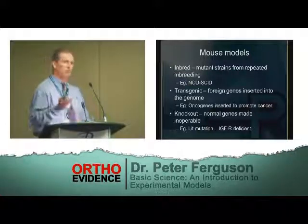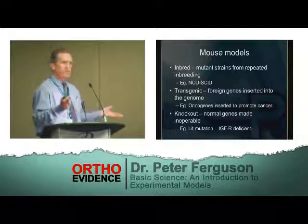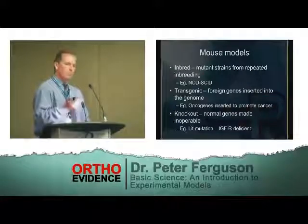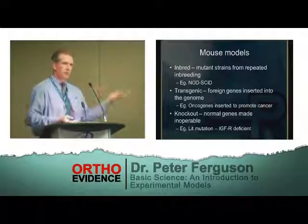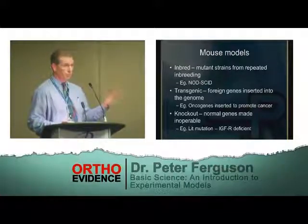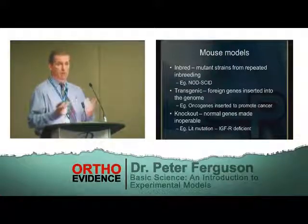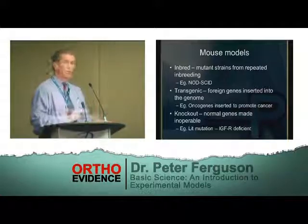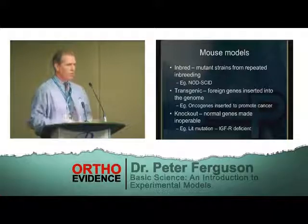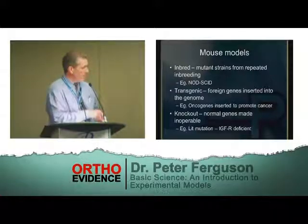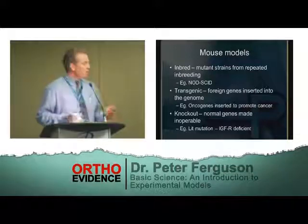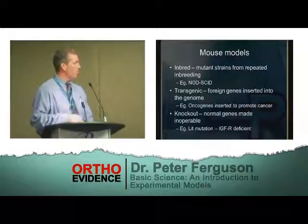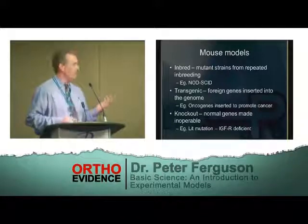Transgenic mouse models allow you to insert a foreign gene so that all cells, or cells in a particular area, will express that gene. For example, you can insert an oncogene with a promoter to induce cancer formation. Or, as we've done, you can insert green fluorescent protein to produce green mice or rats, take cells out, put them into another animal, and see which cells belong to the host. You can also knock out genes — for example, the LIT mutation, an insulin-like growth factor deficient mouse. These homozygous mice — 'LIT' meaning little — are tiny, about a quarter the size of normal mice, and are important for studying the effect of IGF on tumor development.